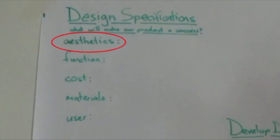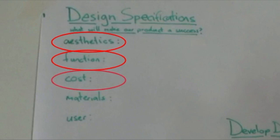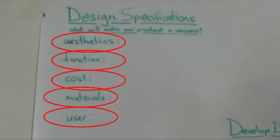In this example, we have chosen aesthetics, function, cost, materials, and user. But the aspects you choose depend on the product you are making.